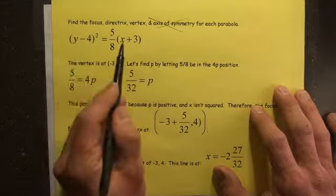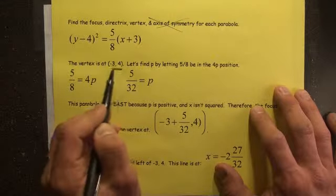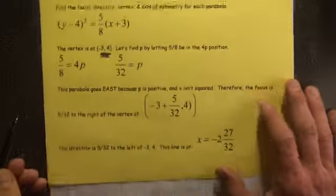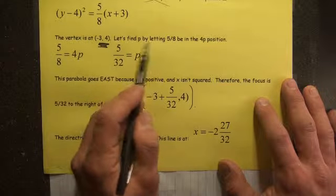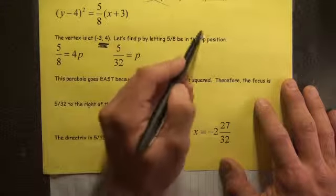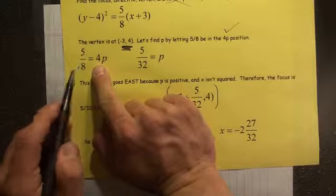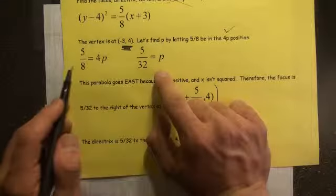In order to make this 0, X would have to be negative 3, as long as 4 was Y. That gives you a 0 to the left. X, negative 3, gives you a 0 on the right. So therefore, this is the vertex. Then let's find P by letting 5H be in the 4P position. Then divide by 4. Bam! 5/32 is P.